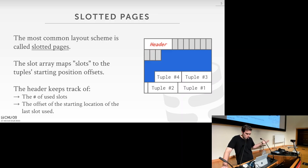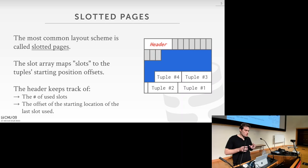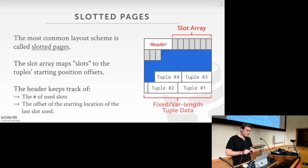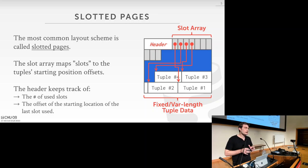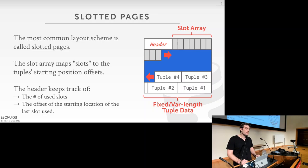To recap: slotted pages are a common layout scheme where individual tuples in a page are mapped to slots. There's a slot array along the top that holds offsets of the tuples, and fixed and variable length tuples along the bottom that the slot arrays point to. This allows filling up pages with variable-sized tuples. The slot array and tuple data grow towards each other in the middle.